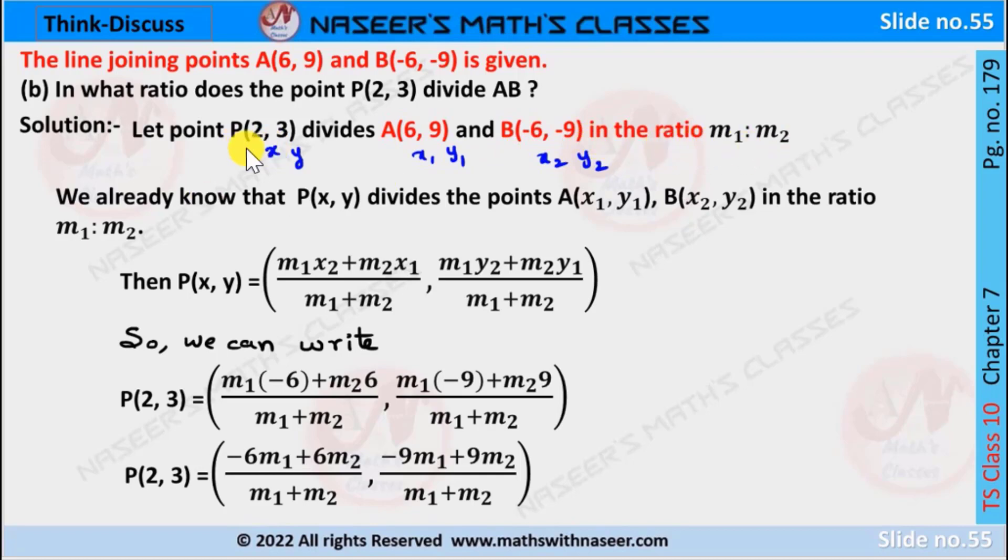Let coordinates of point P as x is 2 and y is 3, and A point coordinates as x1 as 6 and y1 as 9, and x2 as -6 and y2 as -9.